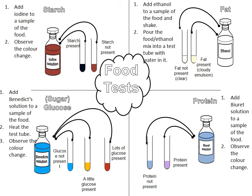To test for fats, one of the methods is called the emulsion test. You add ethanol to the sample of your food and shake it, then pour this mixture into a tube with some water. If fat is not present, it's going to stay clear or colourless. If fat is present, it's going to turn cloudy.